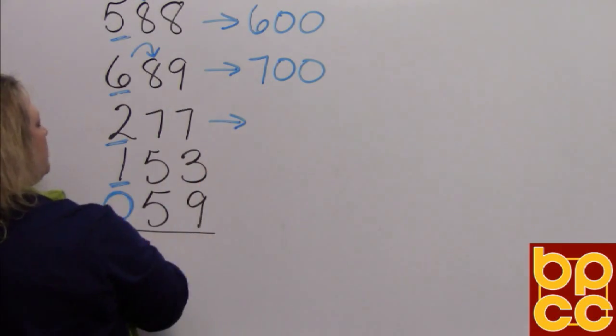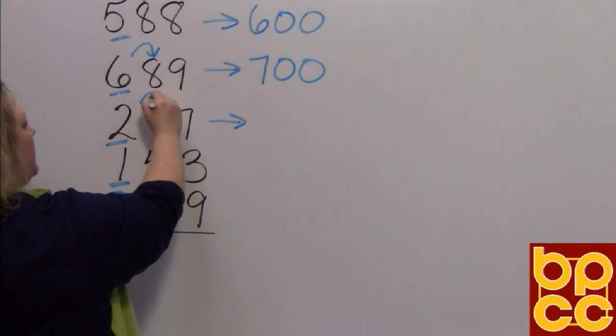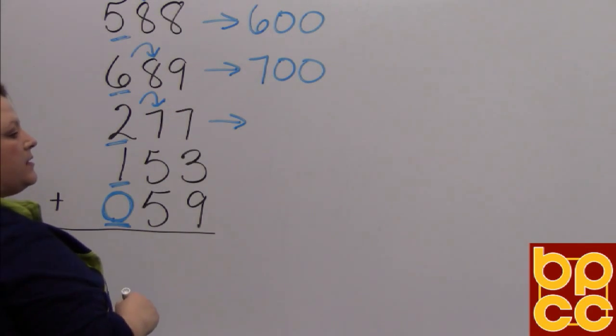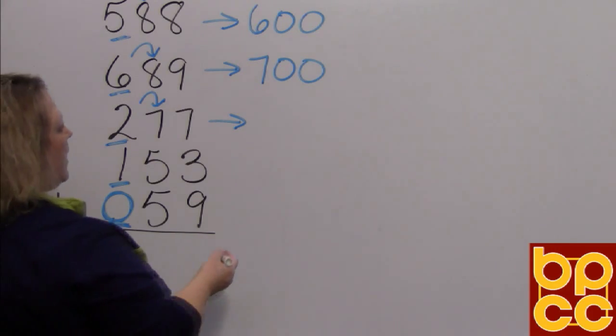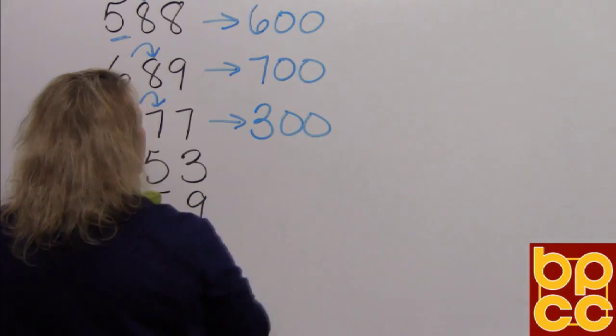Then I do the same thing for the next one. I underline my hundreds digit, which is a two. I look next door. Next door, I see a seven, which is definitely five or more. So I round my two to a three, and the other digits become zeros.